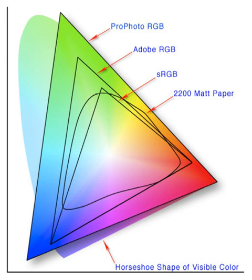Color space conversion is the translation of the representation of a color from one basis to another. This typically occurs in the context of converting an image that is represented in one color space to another color space, the goal being to make the translated image look as similar as possible to the original.